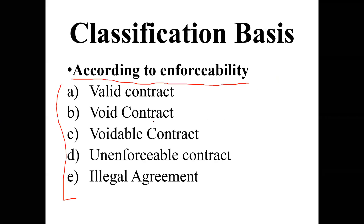Let's start with according to enforceability. Enforceability means whether a contract is enforceable by law or by the court. For example, if you claim that the other party did not fulfill its promises and you want the court to resolve your matter, the court will first look at the enforceability — whether your contract is enforceable by law or not.